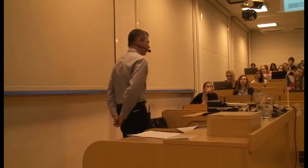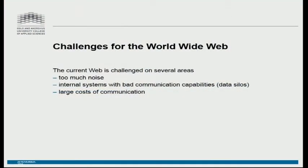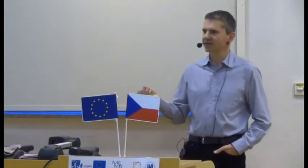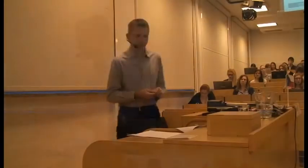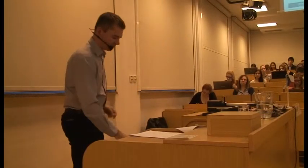The problems with using purely the ordinary web for distributing data are several. The ordinary web creates too much noise when you want to query for information. On a daily basis there's no problem using Google to find information for simpler tasks, but if you wish to find exact data, couple it, and make analysis of it, it gets much harder. We get the problem of noise, internal systems that don't talk together, and the problem of costs of communication.